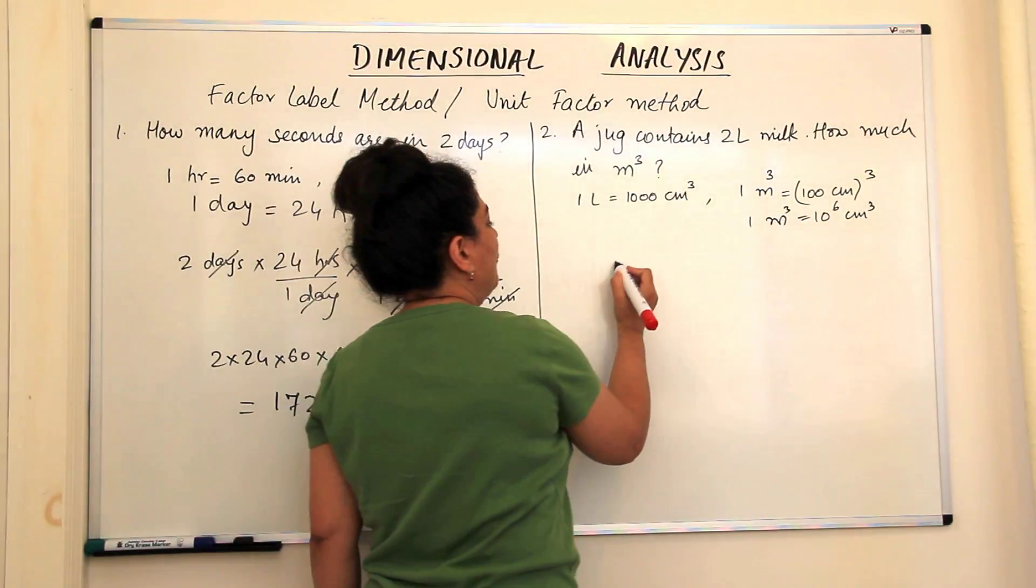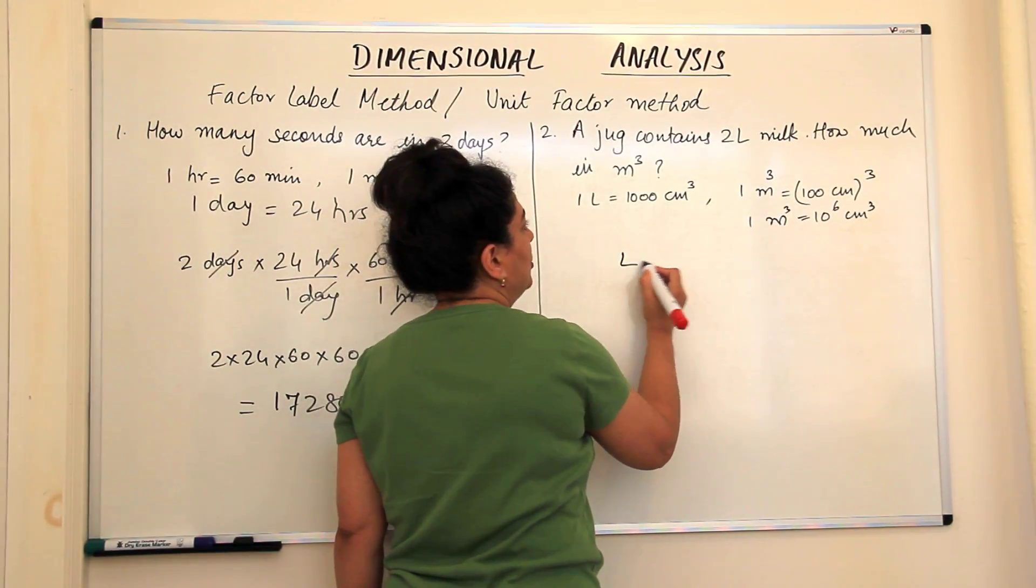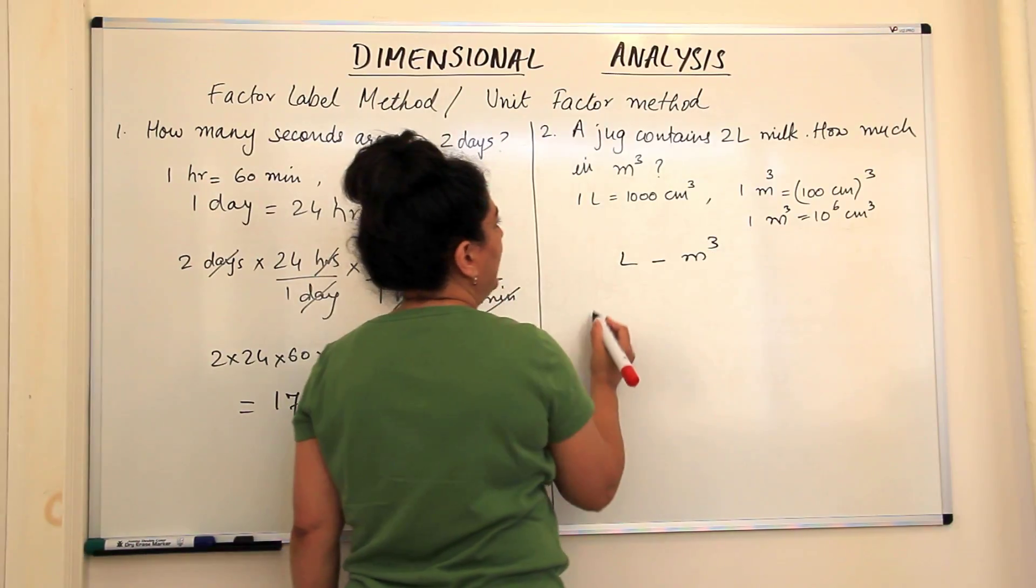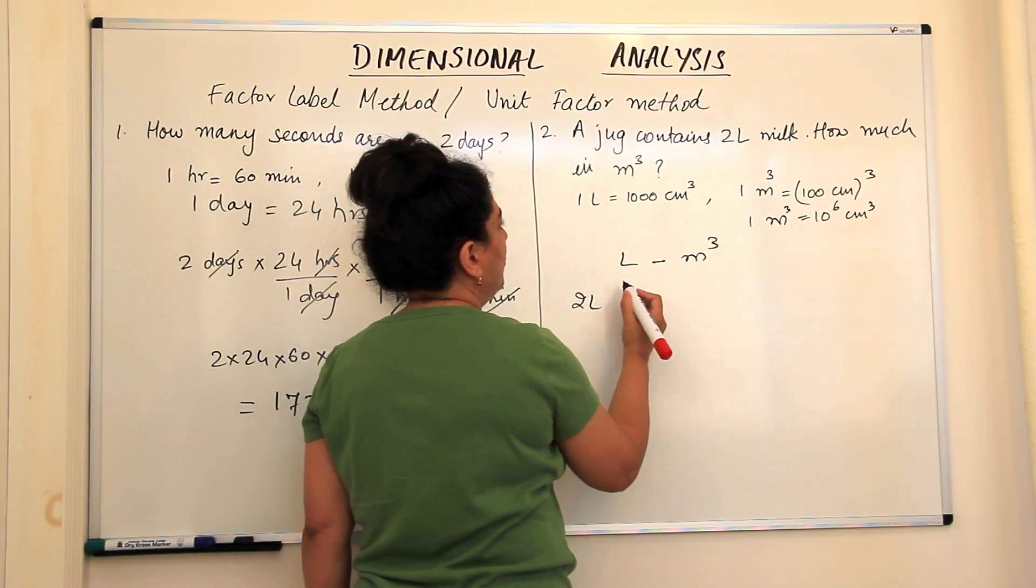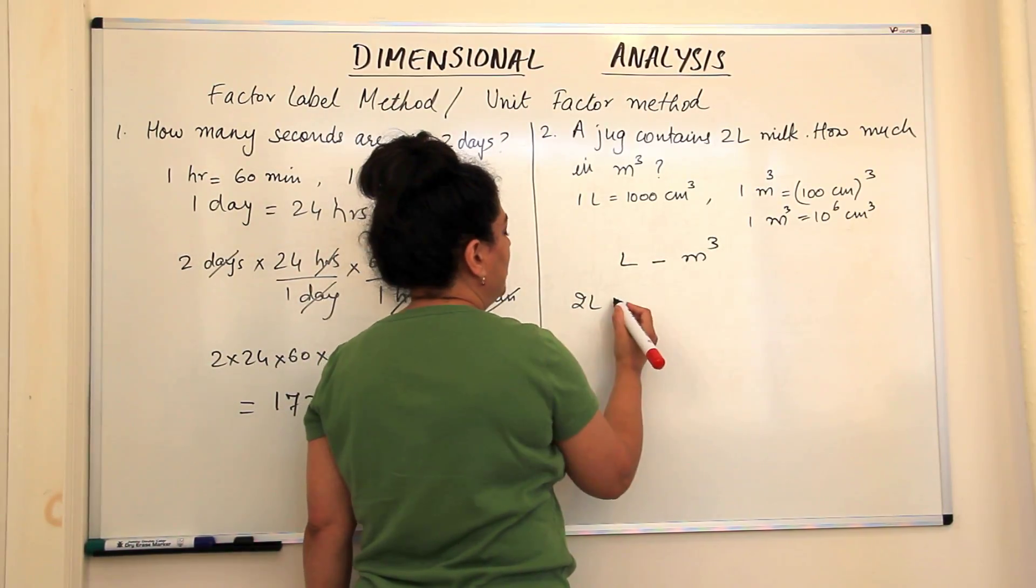This is the relationship we have. Now what's the aim? We want to move from litres to metre cube. So we have 2 litres. Plug in the values now.